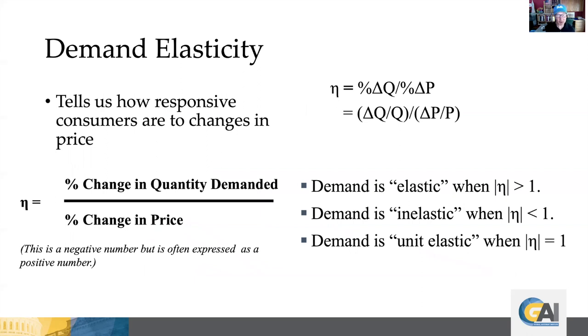Now, one concept which is critical to understand is demand elasticity. Demand elasticity basically tells us how responsive consumers are to changes in price. And it's defined as the percentage change in the quantity demanded over the percentage change in the price. This is a negative number, but it's also expressed as a positive number or absolute value number. Demand is elastic, and that means it's very responsive. The amount that quantity changes is very responsive to a given change in price when the absolute value of the elasticity is greater than one or it's a high number. Demand is inelastic when the elasticity is less than one. And demand is unit elastic when the elasticity is equal to one.